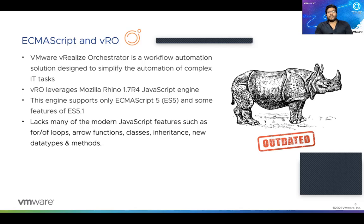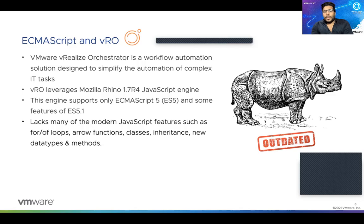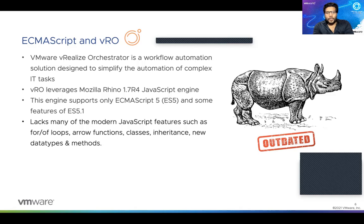Ten years is a long, long time when it comes to coding and coding practices and standards. The outcome is that we, as JavaScript developers, are lacking many modern JavaScript features such as for-of loops, arrow functions, classes, inheritance, new data types, and various new methods — just to name a few. There are so many things. The Rhino engine seems to be outdated and measurably slow. Moving on.